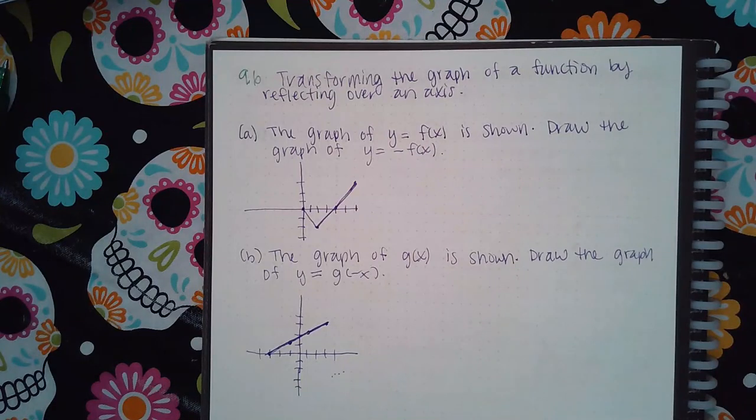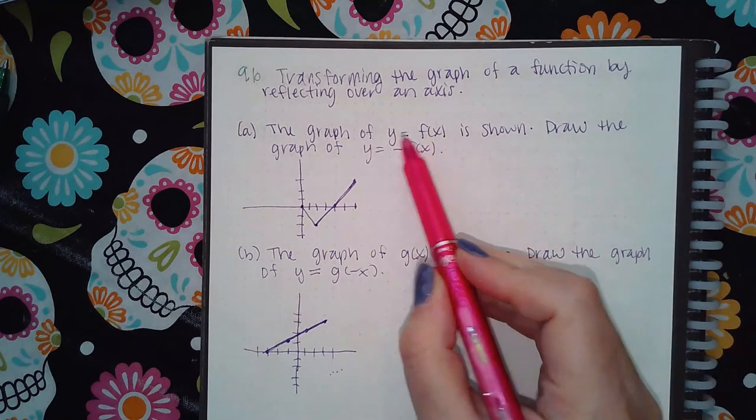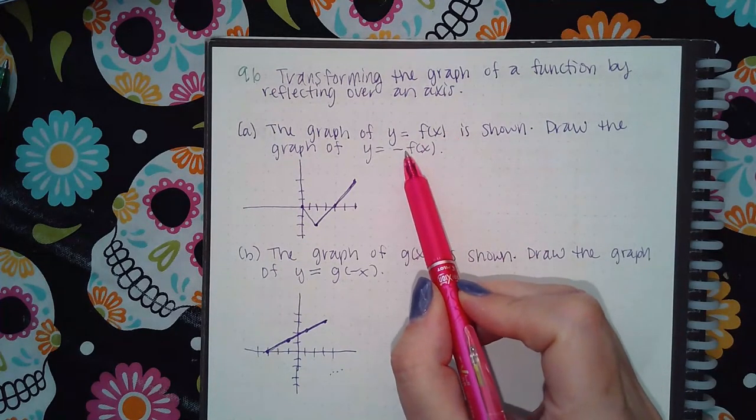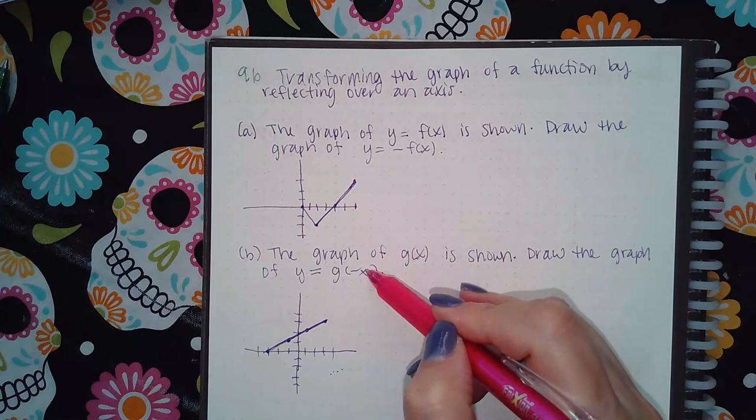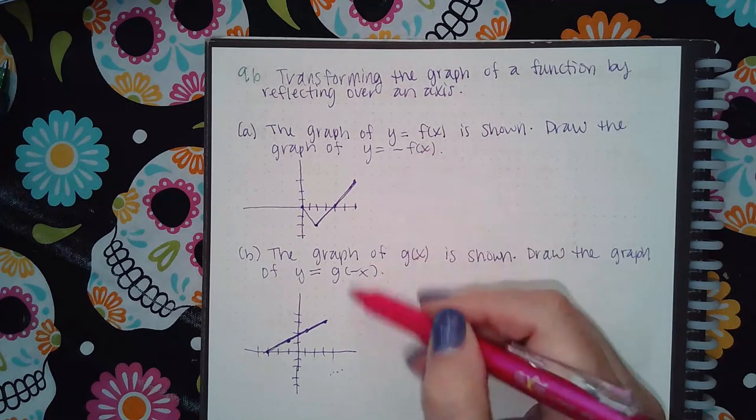So here we have 9.6 transforming the graph of a function by reflecting over an axis. Now they're taking a positive function, a regular function, and they're throwing a negative either outside the function or inside the basic function. And it makes a difference on where that value is.